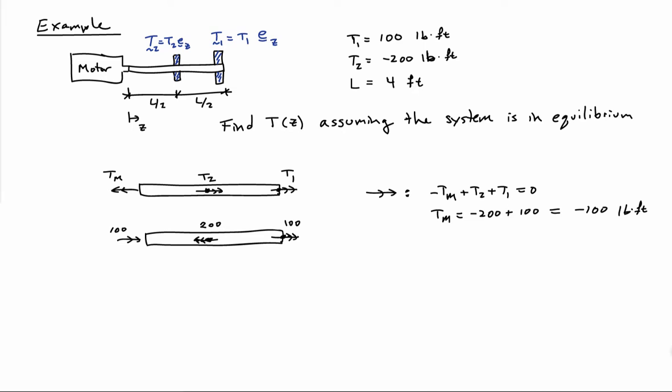So minus 100 foot-pounds, and notice that I flipped the direction of the arrow here. I assumed Tm was positive going to the left, but it turned out to be minus, so I'll draw it going to the right, but with a plus 100 here and not a minus 100.